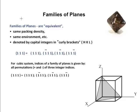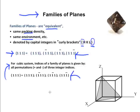Now that we know how to draw planes, give indices, and how to give indices from a drawn plane, we need to now learn about families of planes. Families of planes are equivalent. They have the same packing density, environment, etc. They are denoted by capital integers in curly brackets, like so. Notice these are different than the moon brackets. Given here is the family of 1, 1, 1 planes, and over here are the individual indices for each member of the family. It is important to note, for a cubic system, indices of families of planes are given by all the permutations, plus and minus, of three integer indices.